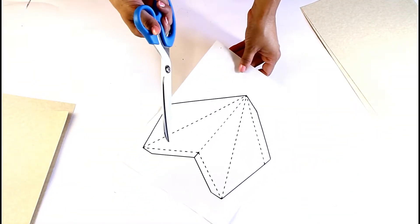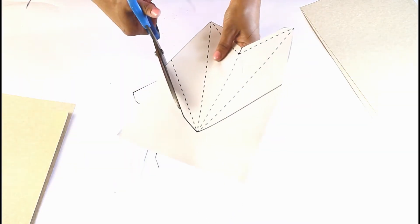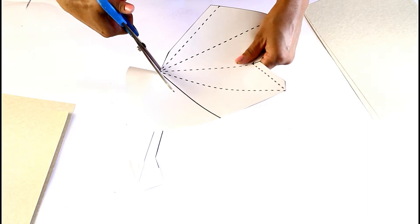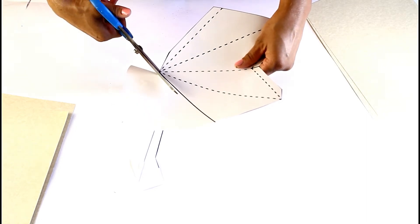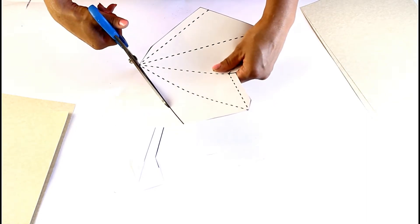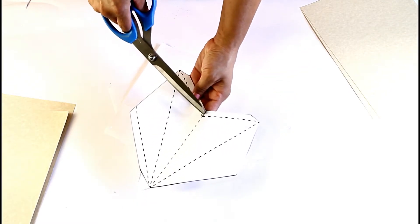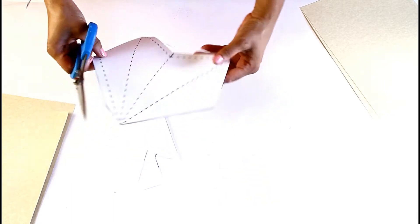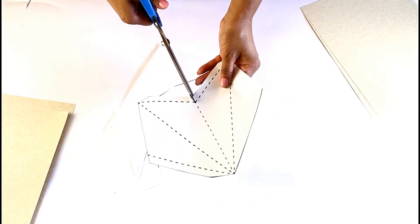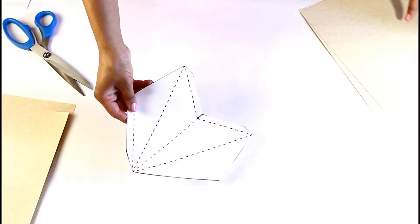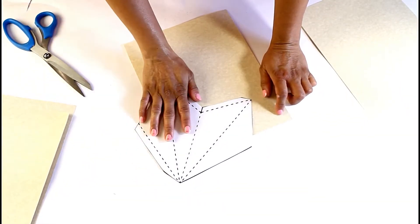I'm going to take my template and cut it out. Now you're only going to cut along the solid line because the dotted lines are for the fold, and you're also going to cut here.